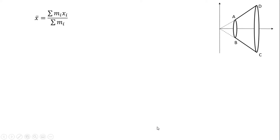x bar is equal to sigma mi xi divided by sigma mi.